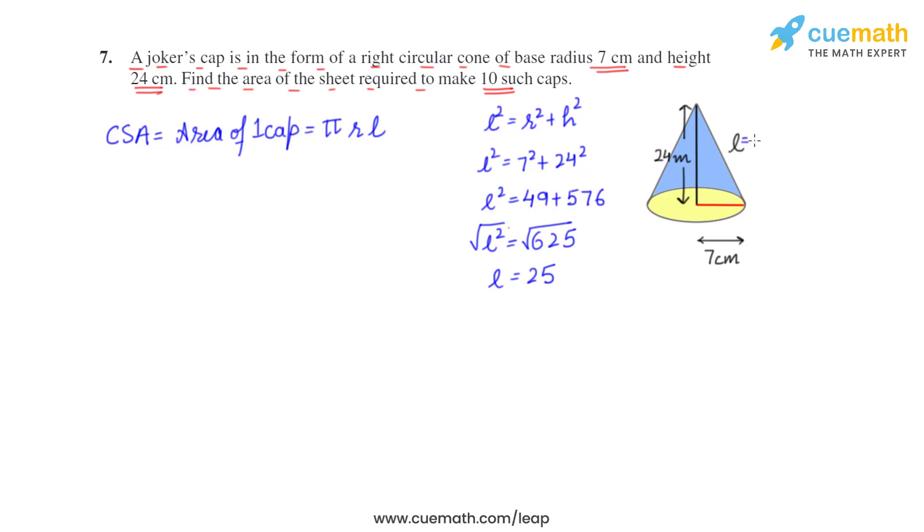Now we will substitute the values here. So π is 22/7 × radius is 7 × slant height we have found out is 25. So when we simplify this, this comes out to be 550 square centimeters.